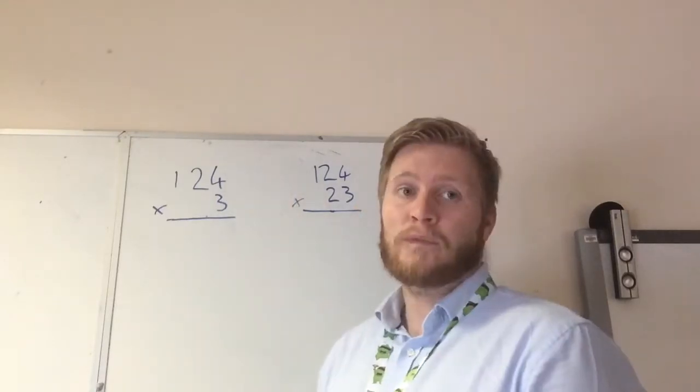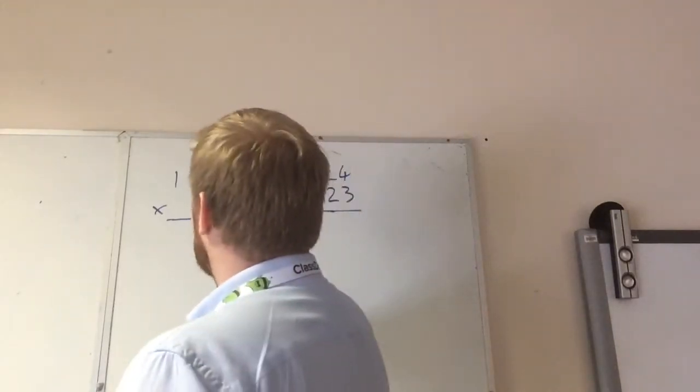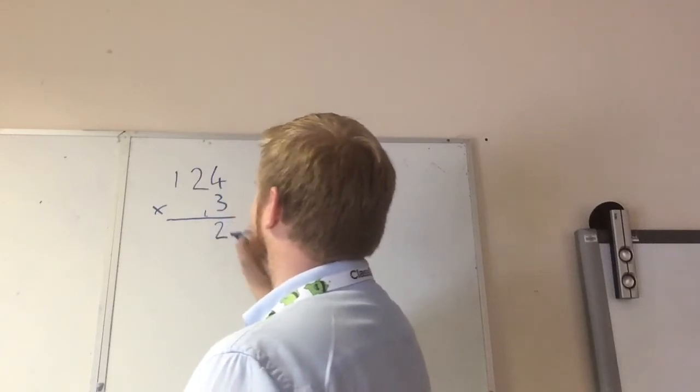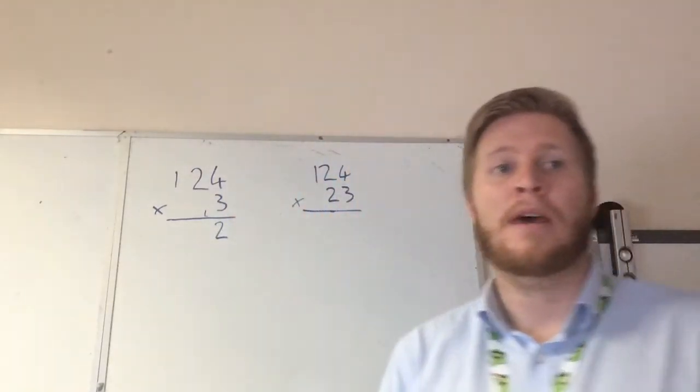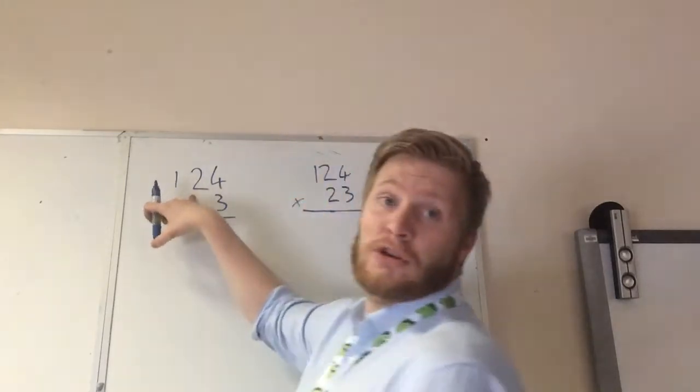So we're going to do 3 times 4, which we know is 12, so we put our 1, 10 in the 10th column, and our 2 units there. The next one we're going to do, we're going to move on to the next digit, which is a 2.